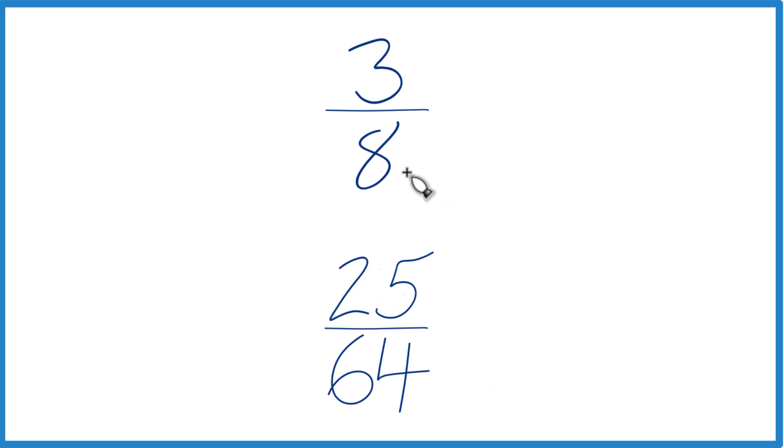So you could do this two ways. You could divide 3 by 8 on a calculator, get a decimal, divide 25 by 64 on a calculator and get a decimal, just compare them, see which decimal is larger.